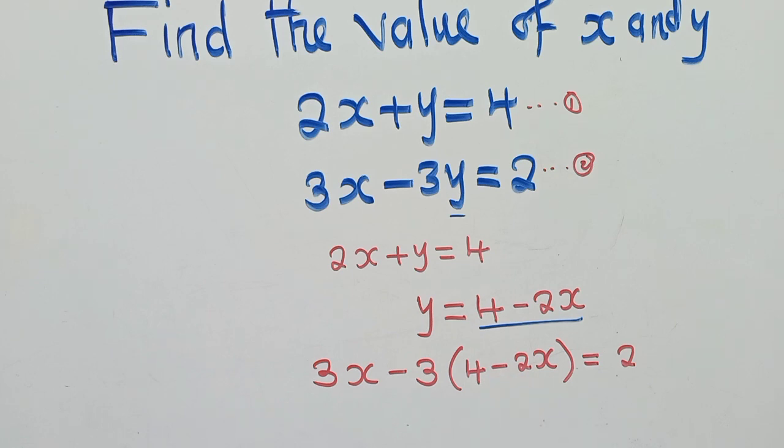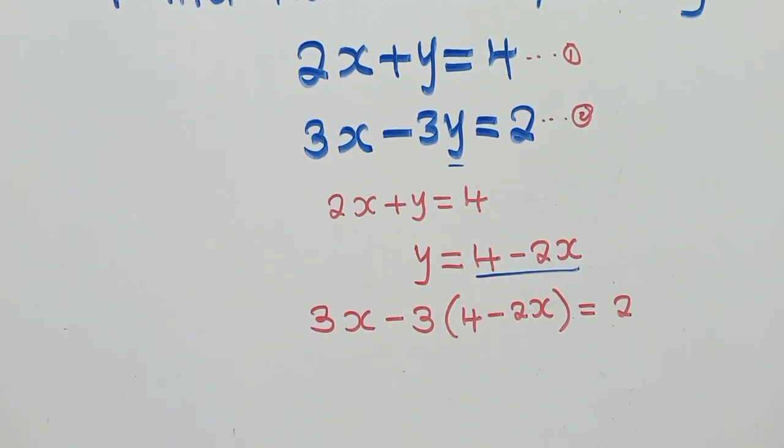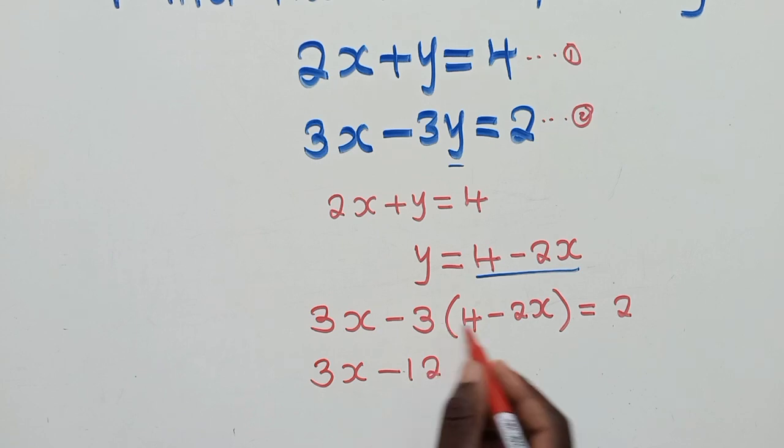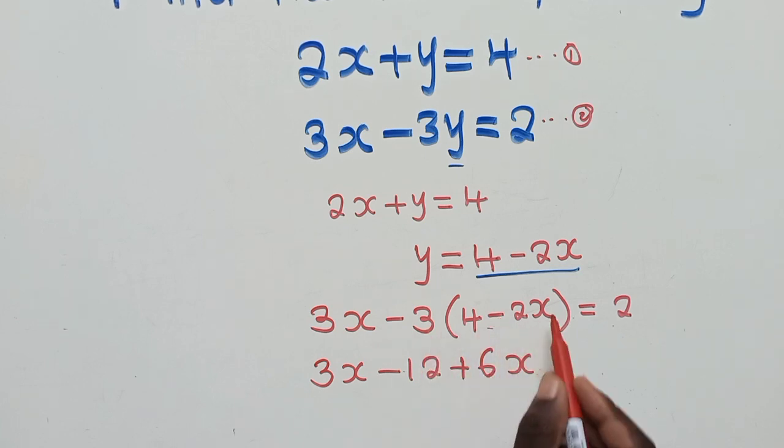The next thing here is to solve for x. So how do we solve for x? Order of operation needs to be applied here. So we shall have 3x minus 12. We get rid of the brackets. So negative 3 times 4, it's negative 12. Plus 6x. Negative and negative, it's positive 3 times 2. It's a 6 and x there. It's equal to 2.